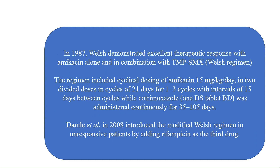In 1987, Welch demonstrated an excellent therapeutic response with amikacin alone and in combination with TMP-SMX, known as the Welch regimen. It included cyclical dosing of amikacin at 15 mg per kg per day in two divided doses, in cycles of 21 days for 1 to 3 cycles with intervals of 15 days between cycles, while Cotrimoxazole was administered continuously for 35 to 105 days.